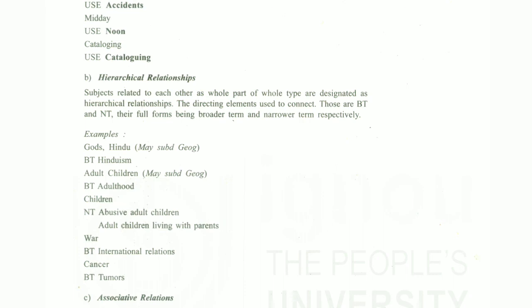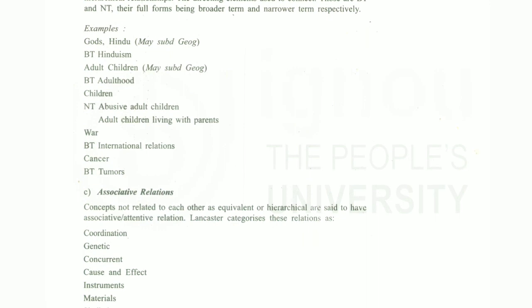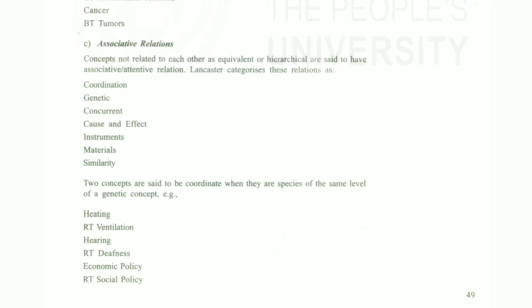There are two types of headings in LCSH: those in bold face type and those in normal type. Regarding the components of an entry, there is a scope note. Subjects related to each other as whole-part relationships are designed under hierarchical relationships. Terms that connect to each other as equivalent or hierarchical are said to have associated relationships.